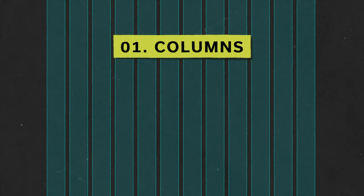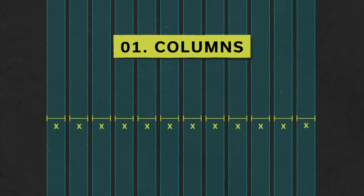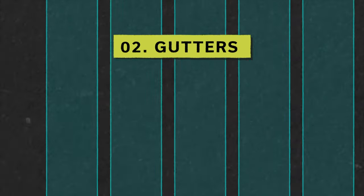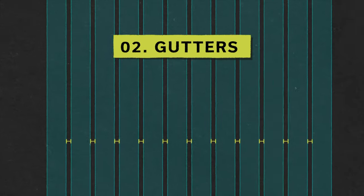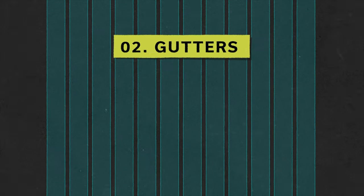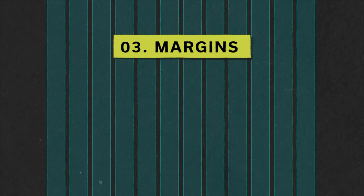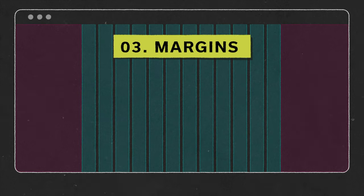A quick recap of the basics. Grid systems are made of a series of columns. They stretch from top to bottom and they are always the same size. Next up, the gutters — they are the small spaces between the columns and depending on the project, you can set them up however you like. Last up are the margins — the empty areas on the sides of our grid system. We use them when we don't want to fill the entire viewport and want the content centered in a specific area.